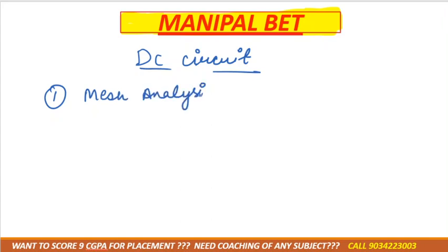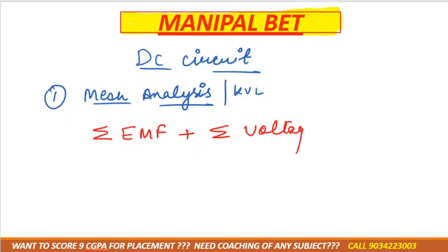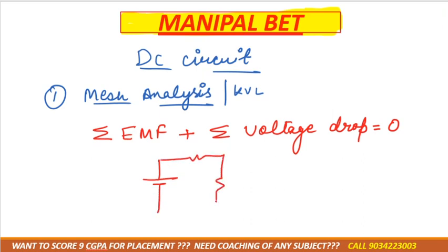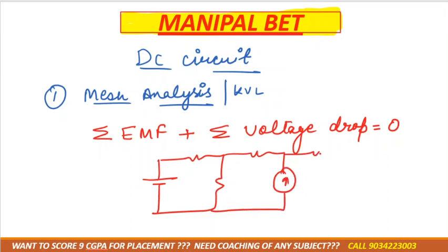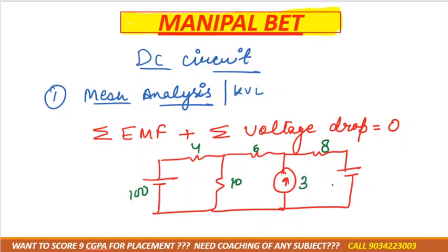Mesh analysis and KVL mean the same thing. In mesh analysis, the algebraic sum of all the EMF plus the algebraic sum of all the voltage drops would be equal to zero. For example, if we have three meshes, including a current source — because students often get stuck on current sources — we will have three variables and three equations to form.